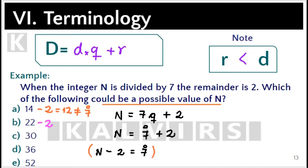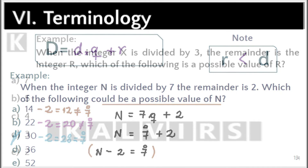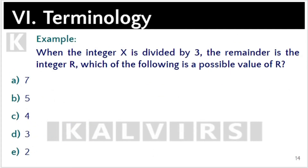For choice B: 22 minus 2 is 20, and 20 is not a multiple of 7, so choice B is discarded. For choice C: 30 minus 2 is 28, and 28 is a multiple of 7, therefore 30 is a possible value for n. Choice C is correct.